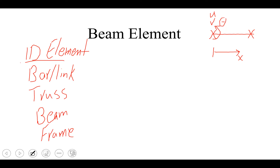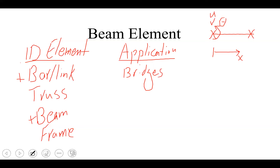Frame elements are the combination of beam as well as bar elements. The application of beam elements is vast in mechanical engineering. We can model bridges, find deflection of shafts, pipes, using beam elements. And because they are one-dimensional, they are very computationally efficient. If we can get away with one dimension, there is no need to go into two-dimensional or three-dimensional element types.